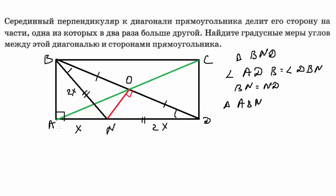Рассмотрим треугольник ABN. Данный треугольник прямоугольный. AN — катет, равный x; BN — гипотенуза, равная 2x. По теореме: напротив угла 30° лежит катет, равный половине гипотенузы. Значит, данный угол равен 30°.